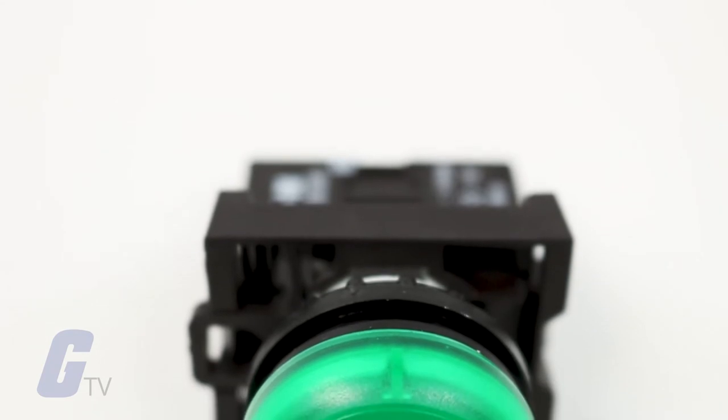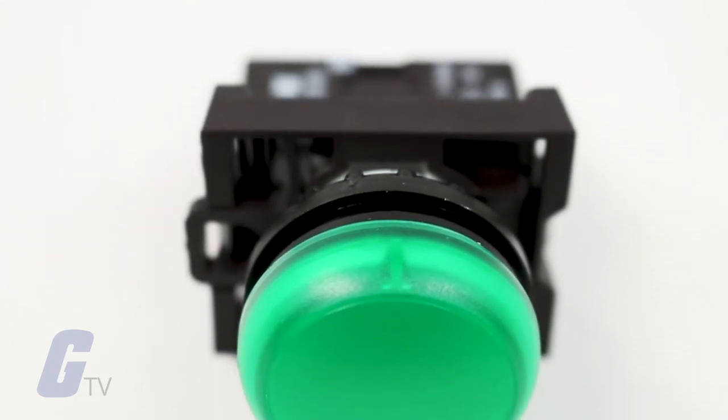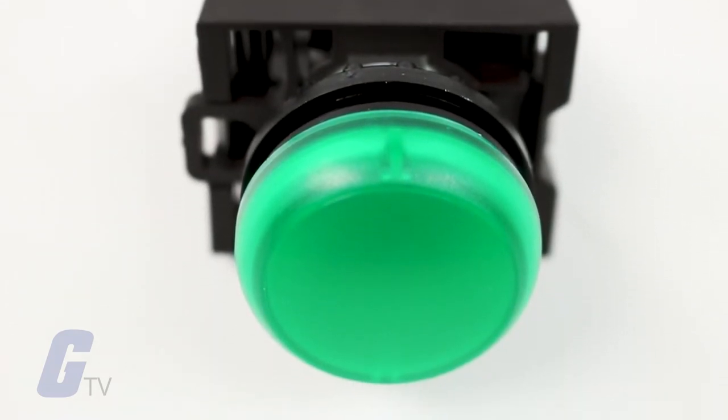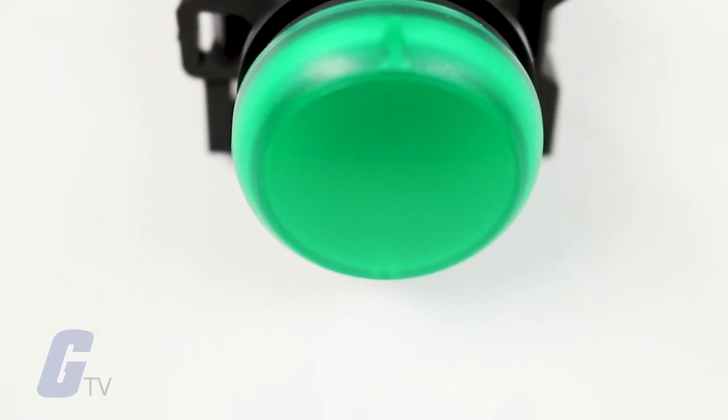Generally, pilot lights are assembled to fill two primary requirements: lens color to differentiate between different status conditions on a machine or panel,